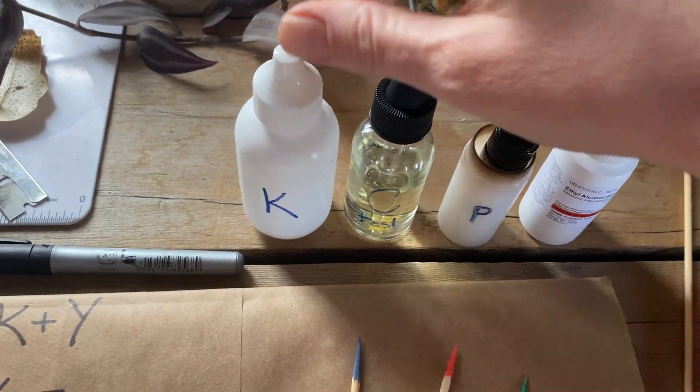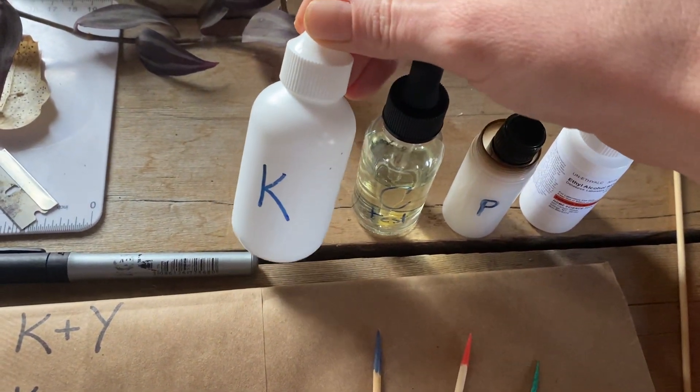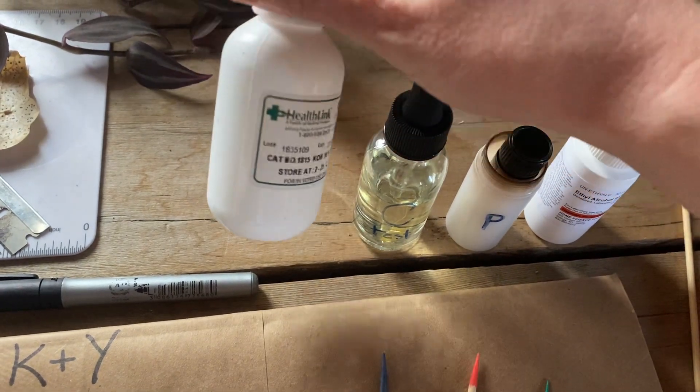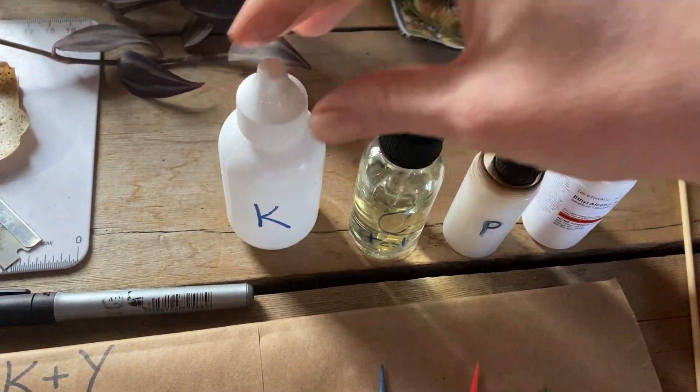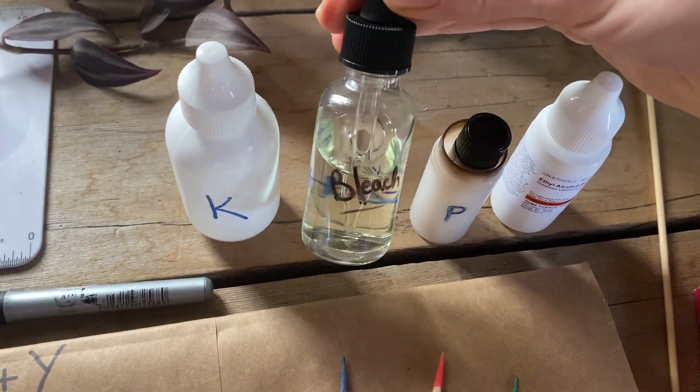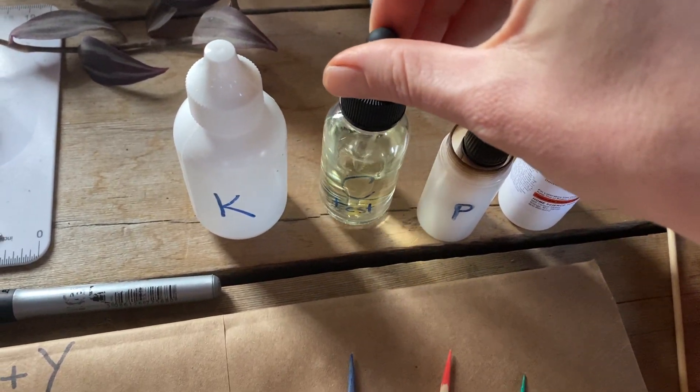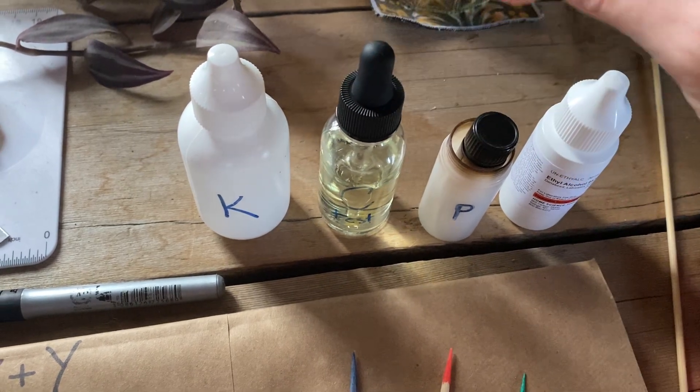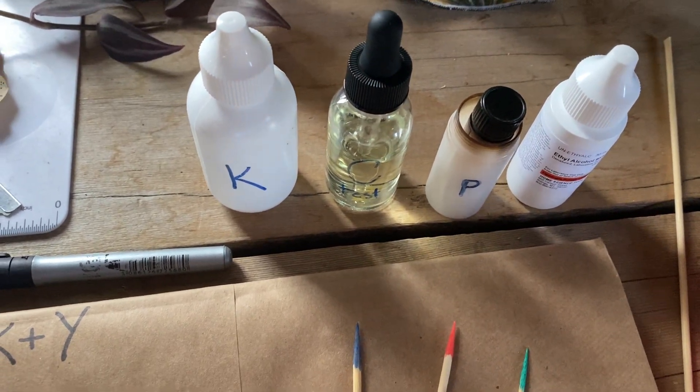The K test is an aqueous solution of 10% potassium hydroxide, KOH. And the C test is simply undiluted commercial bleach. You can also use 5.25% sodium hypochlorite, but I find bleach easier to come by.